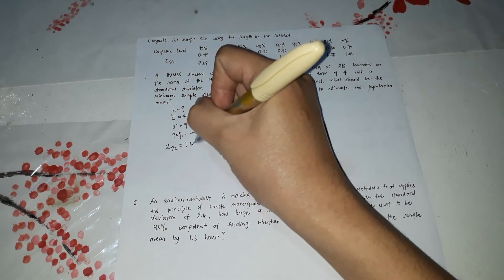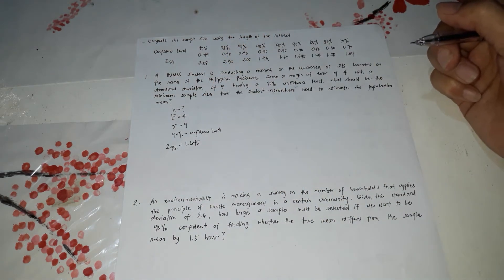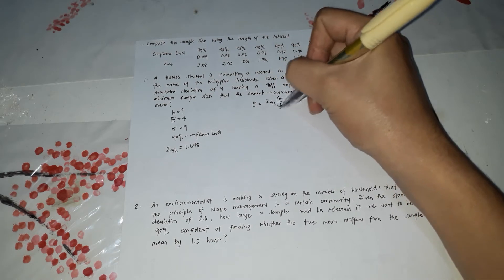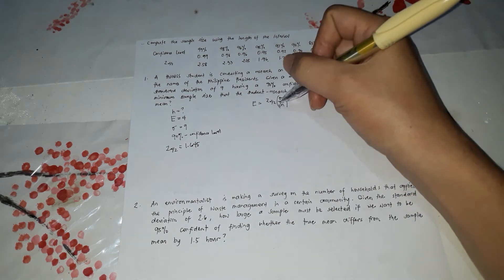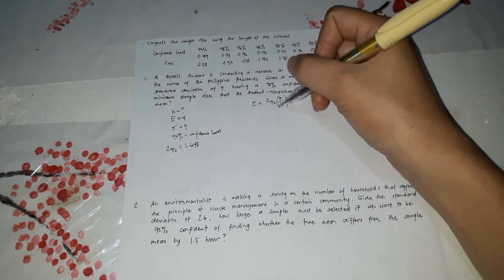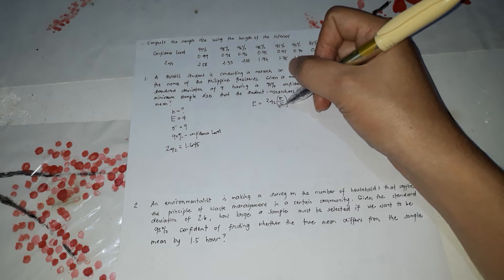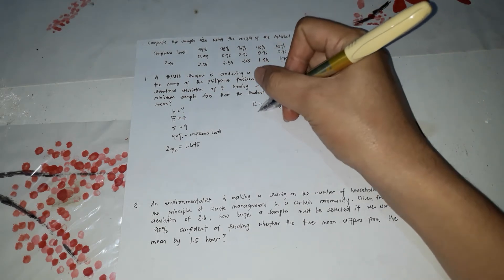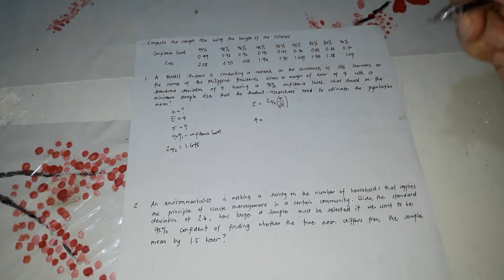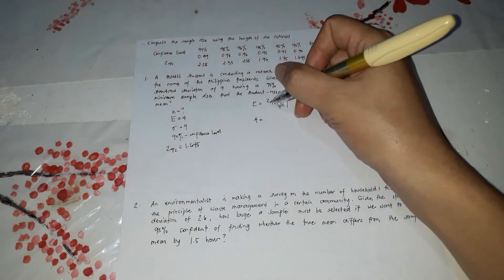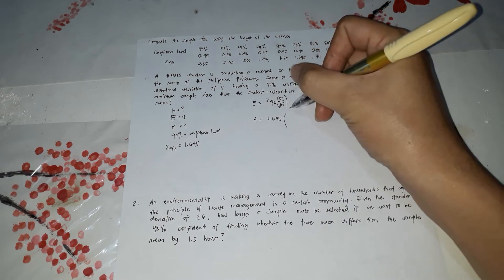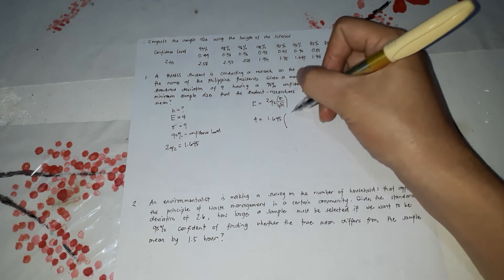So now we need the formula. The formula for E, we're going to use the formula for E for us to get the formula for the sample size. You could substitute directly from here or you could simply solve for N first in terms of the other variable. We could start by substituting first. And the second example we're going to use the formula of N. So E is equal to 4. The Z is equal to 1.645. The standard deviation is 9 divided by square root of N.